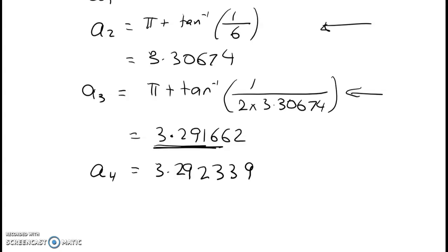So to two decimal places, we've got a is equal to 3.29.